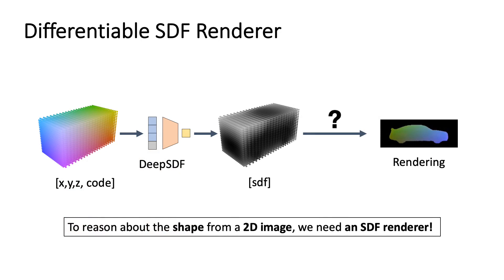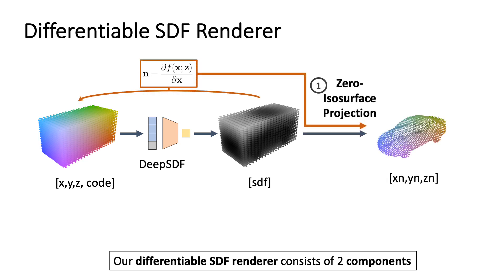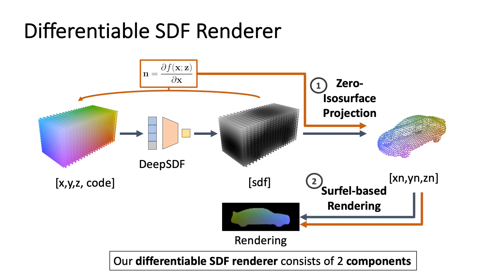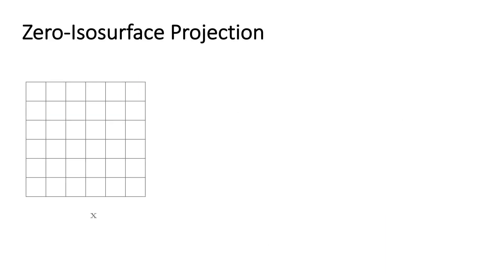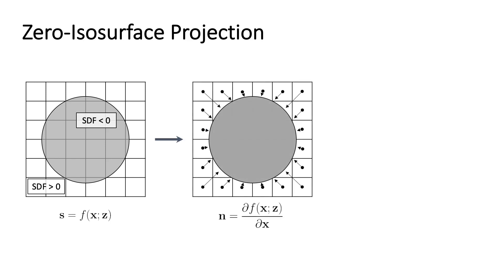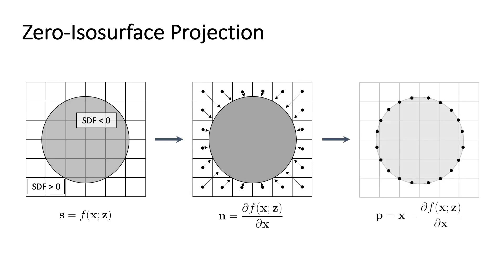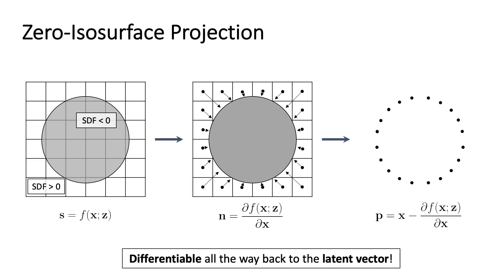An essential component of our auto-labeling pipeline is the possibility to reason about pose and shape from 2D images. For that, we need a differentiable renderer working on the SDF representation used by our database. Since current differentiable renderers are purely mesh-based, we developed a custom one taking SDFs as input. It consists of two components: the zero isosurface projection, which moves the input grid points onto the object's surface, and the surface-based renderer. The zero isosurface projection starts with an SDF grid, utilizing analytically computed normals as a derivative of the SDF with respect to the input grid points. Since normals outline the direction to the closest surface and signed distance values provide the exact distance, we can project the query grid points onto the surface of the object.